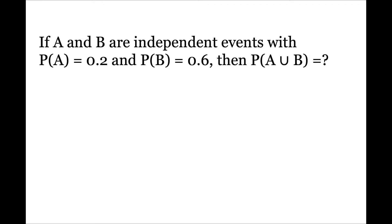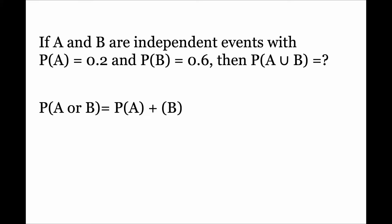Now, if you recall your rule of addition, we saw a rule that stated probability of A or B occurring is equal to probability of A plus probability of B, but this condition is only if the two events are mutually exclusive. Mutually exclusive events are dependent events, thus we cannot apply this formula.